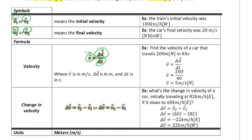Find the velocity of a car that is traveling 200 meters north in 40 seconds. So that becomes 200 divided by 40, which is five meters per second north. You have to include the direction.